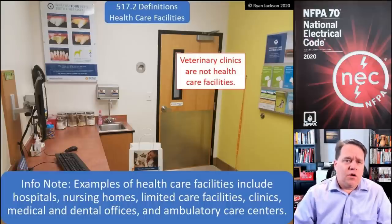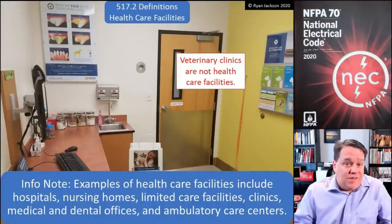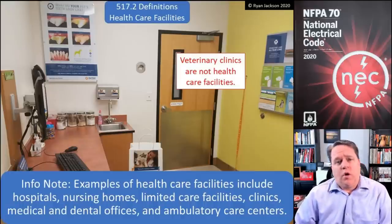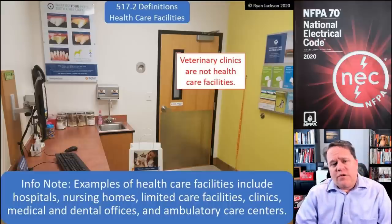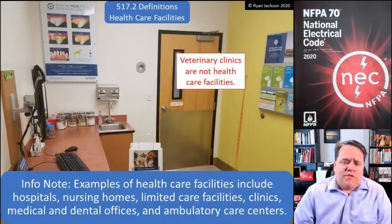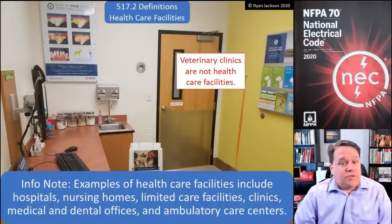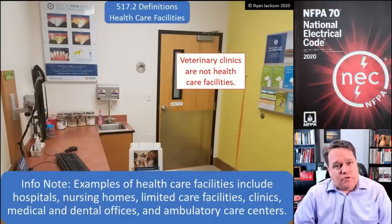If you're wiring a veterinary clinic, you would not be reading article 517. The NEC covers veterinary clinics, but it doesn't have any special rules for them — you'd wire a vet clinic no differently than an office building. An informational note tells us that examples of health care facilities include hospitals, nursing homes and limited care facilities, clinics, medical or dental offices, and ambulatory care centers.